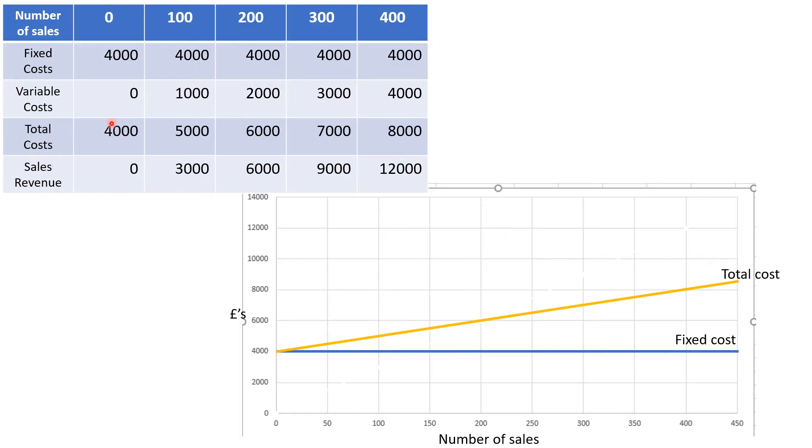So the third line that we put on is our sales revenue line. And if you sell nothing, you get nothing. So it will always start here.